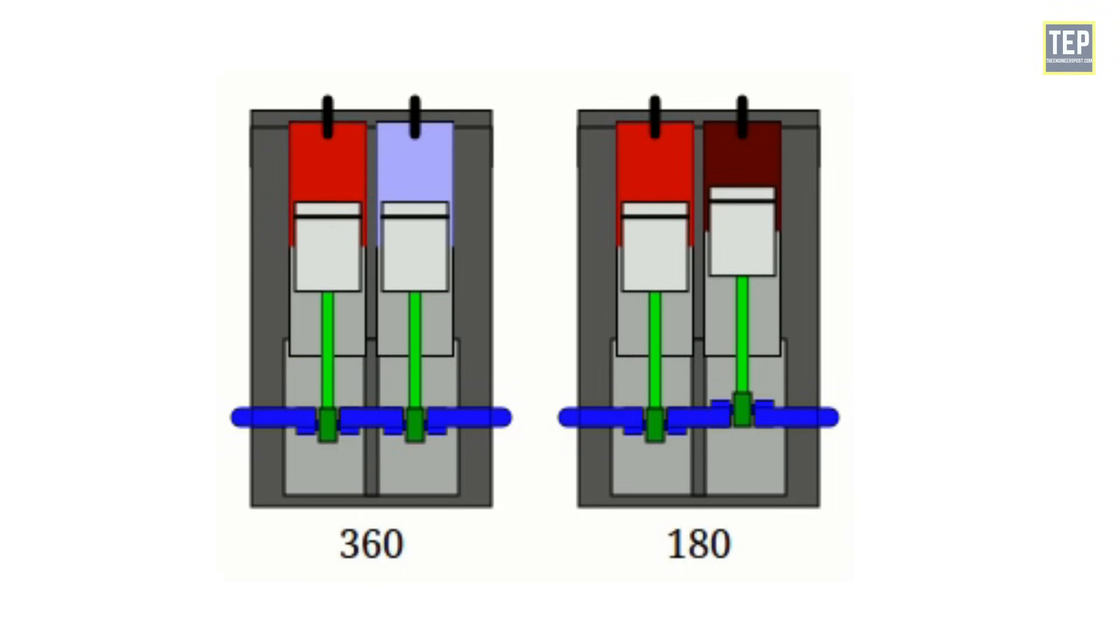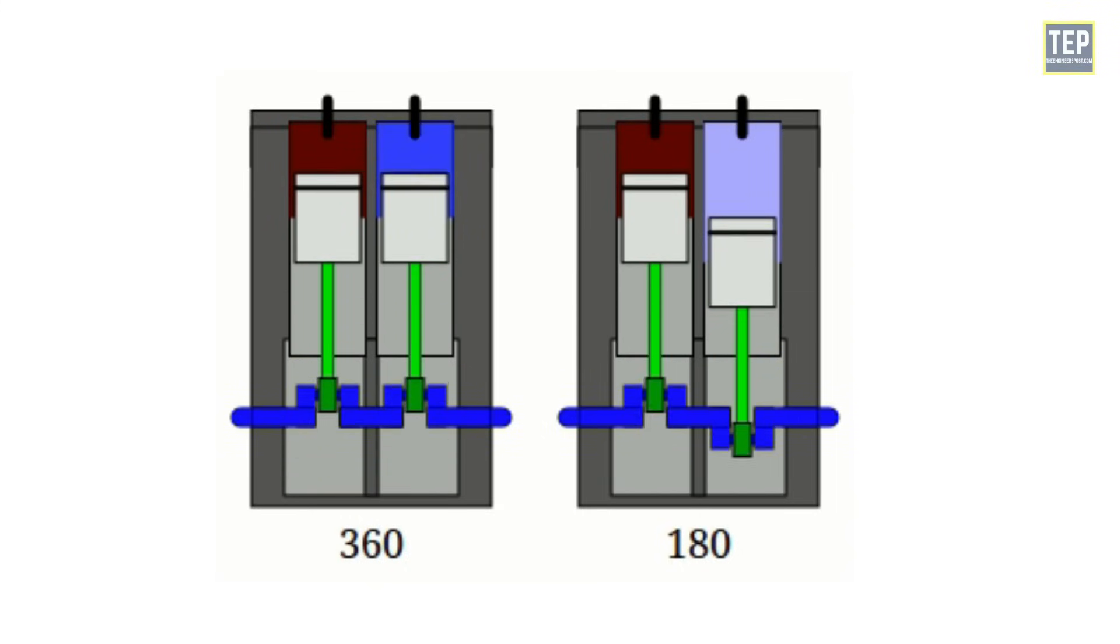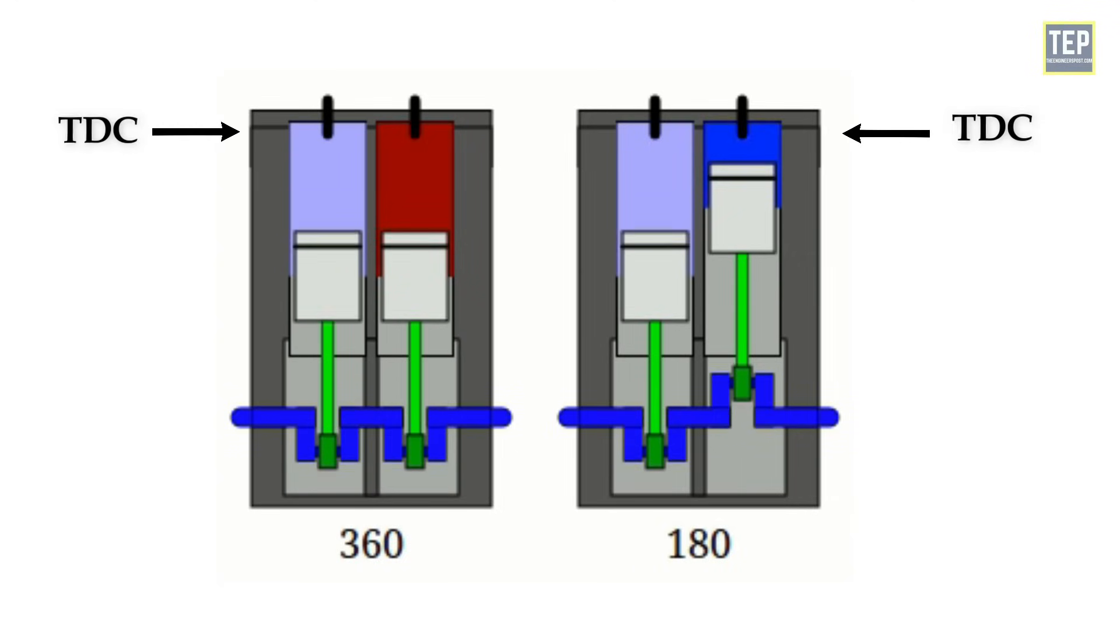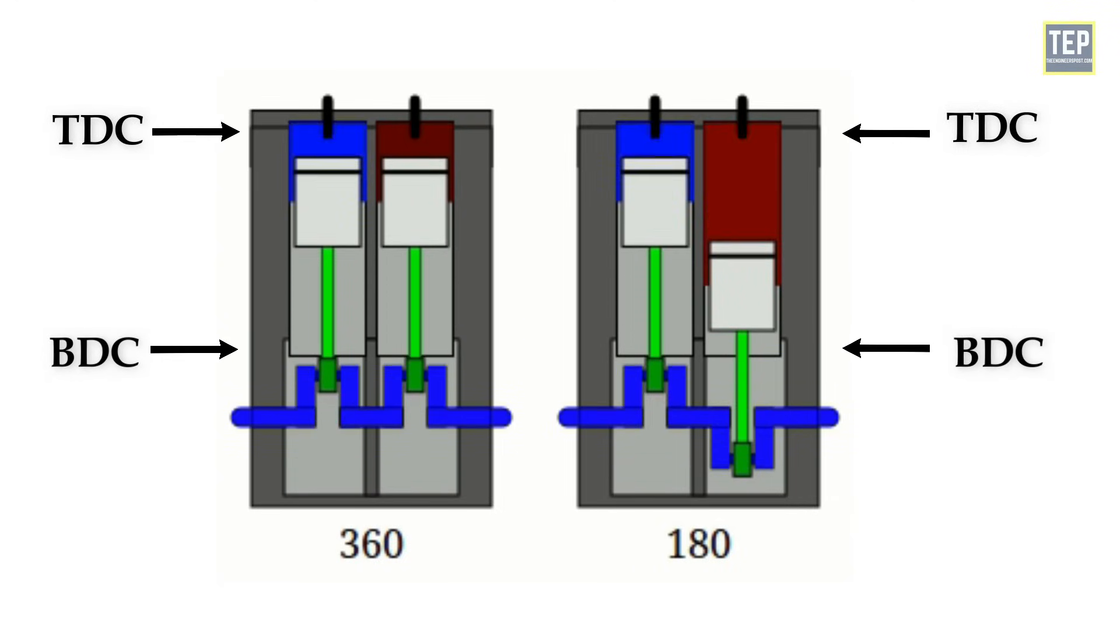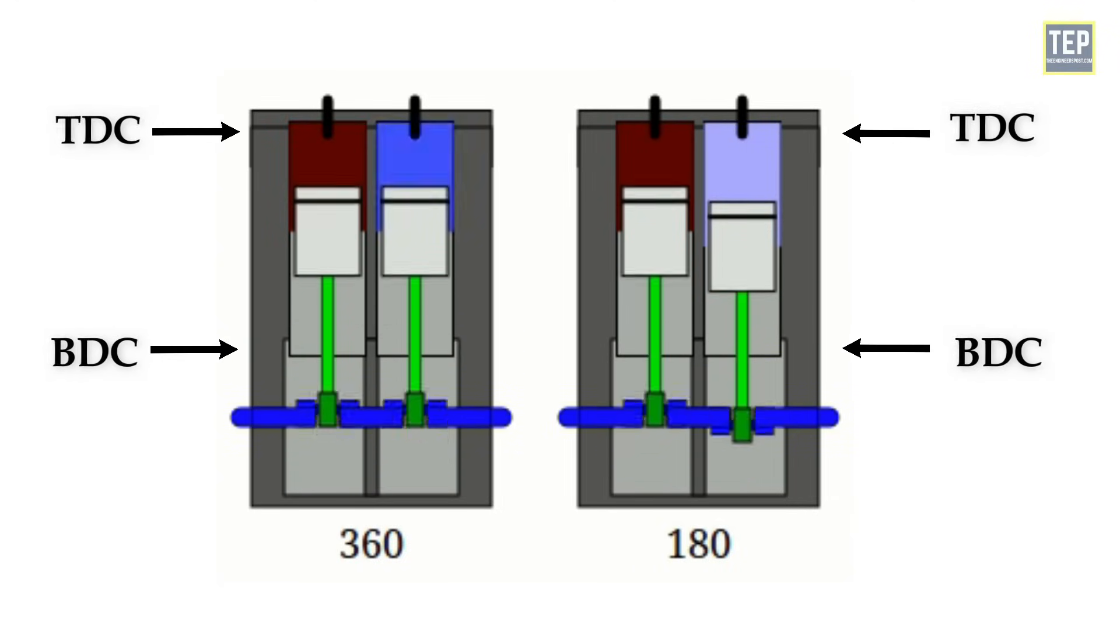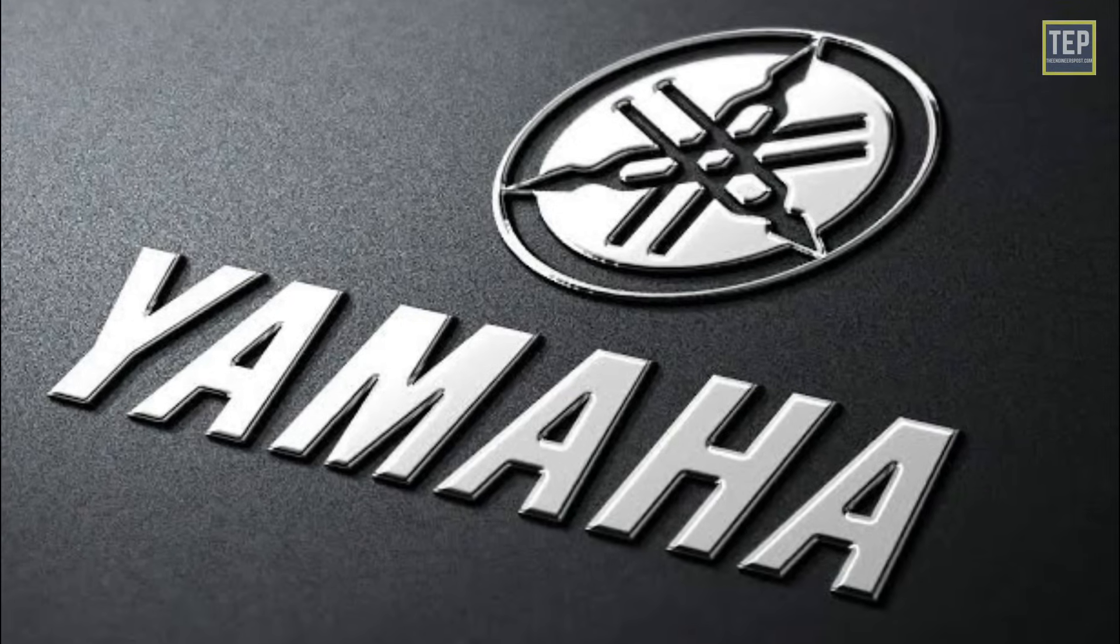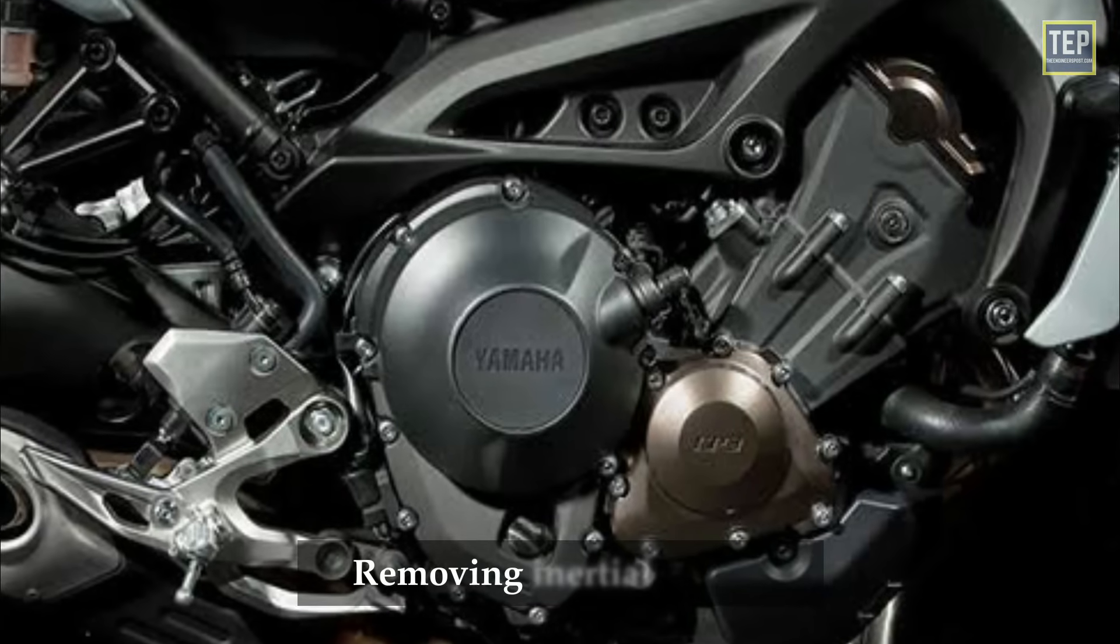In 360 and 180-degree configurations, there's always a point where a piston is either at top dead center or bottom dead center, and thus has to start moving again in the opposite direction.